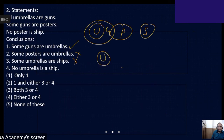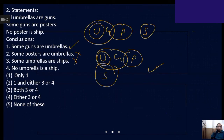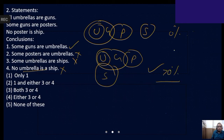All umbrellas are guns, some guns are posters, no poster is ship — this diagram is also satisfying all the statements. In this diagram, 'no umbrella-ship' is not valid. If even in one diagram a conclusion is not valid, we declare it as not valid. Now, either-or combination between umbrella and shape: either it is zero percent or more than zero percent — one must be valid, both cannot be invalid together. So either-or exists between conclusions three and four. Choice number two is the answer.